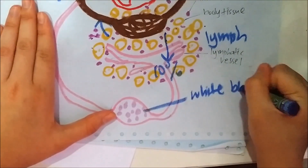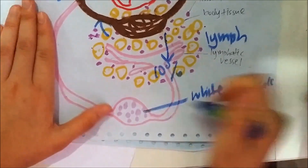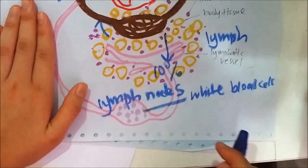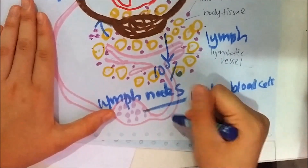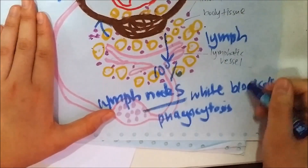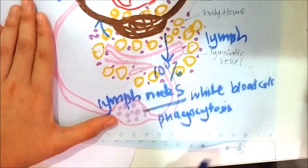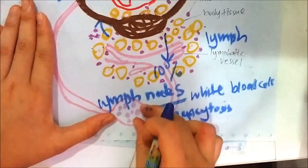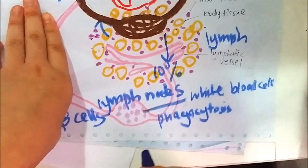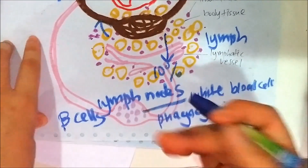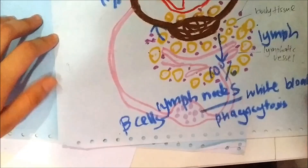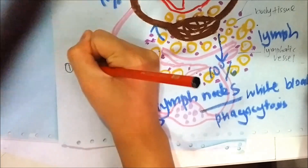In the lymphatic vessel there are lymph nodes. Lymph nodes contain white blood cells, and therefore they carry out phagocytosis of pathogens. Lymph nodes also contain B cells which carry antibodies to attack those pathogens.